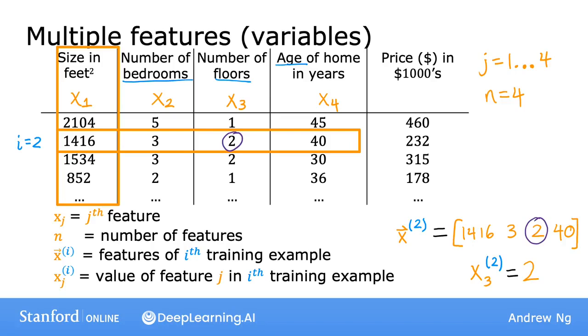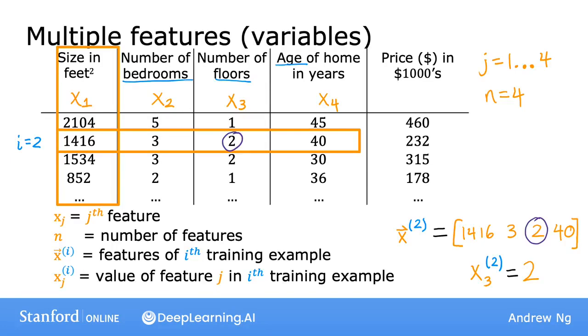Sometimes in order to emphasize that this x2 is not a number, but it's actually a list of numbers, that is a vector, we'll draw an arrow on top of that, just to visually show that is a vector. And over here as well. But you don't have to draw this arrow in your notation. You can think of the arrow as an optional signifier that's sometimes used just to emphasize that this is a vector and not a number. Now that we have multiple features, let's take a look at what our model would look like.